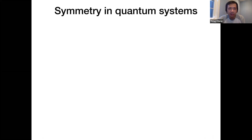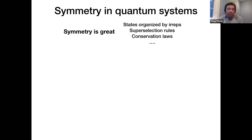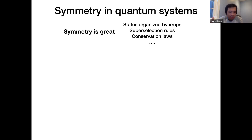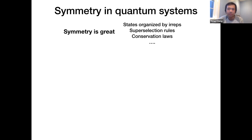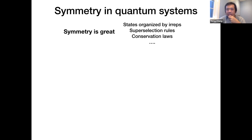Without any doubt, symmetry is an extremely powerful notion in modern physics. If we know a system has a certain symmetry, we immediately know a few nice things without doing much work. For example, we know that eigenstates of a system can be organized according to representations of the symmetry group, and we have selection rules that tell us which physical processes are allowed and which are forbidden. And if the symmetry is continuous, Noether's theorem tells us there are conservation laws.